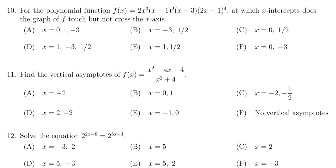We're given a polynomial function. It's factored. We have 2x cubed times x minus 1 squared times x plus 3 times 2x minus 1 to the 4th power. At which x-intercepts for this polynomial do we touch but not cross the x-axis?